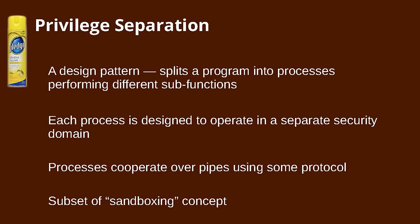Privilege separation is a design pattern — it's a way you write a program. In general we do this for brand new pieces of software, as it's sometimes difficult to insert the functionality into a piece of software later on. The idea is that a particular service or program is split into multiple programs interconnected with pipes that talk to each other, and each process is designed to perform a separate function. You don't have the main program capable of doing everything.